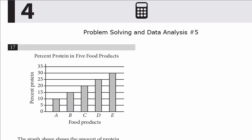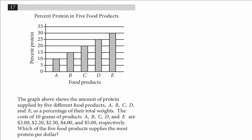We have this histogram. Let's read the question. The graph above shows the amount of protein supplied by five different food products, A, B, C, D, and E, as a percentage of their total weights.